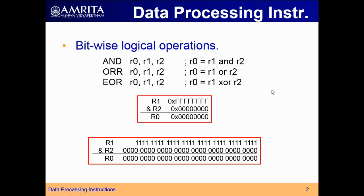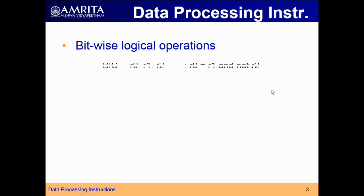These are the three bitwise logical operations. Next, there is a special type of bitwise logical operation known as BIC, which stands for bit clear operation. This instruction is used for clearing particular bits in a register. If you write BIC R0, R1, R2, the operation performed is: R0 equal to R1 AND NOT of R2. Let us take one example.